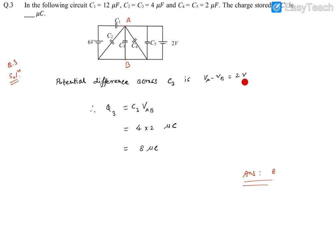Now Q is equal to C into V, so C, that means C3 is given as 4 microfarads, so 4 into 2, that is 8 microcoulombs.